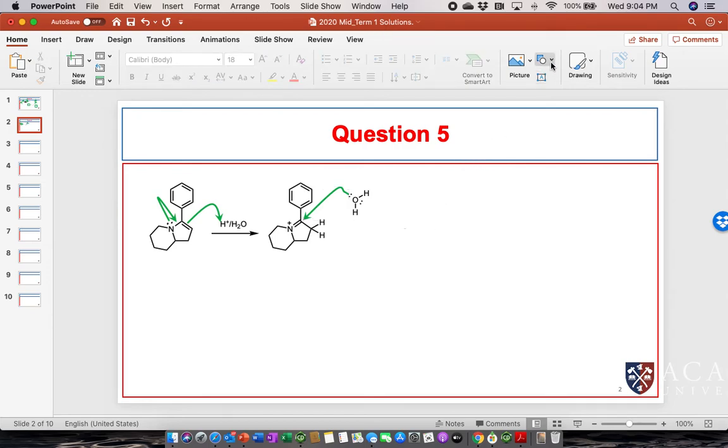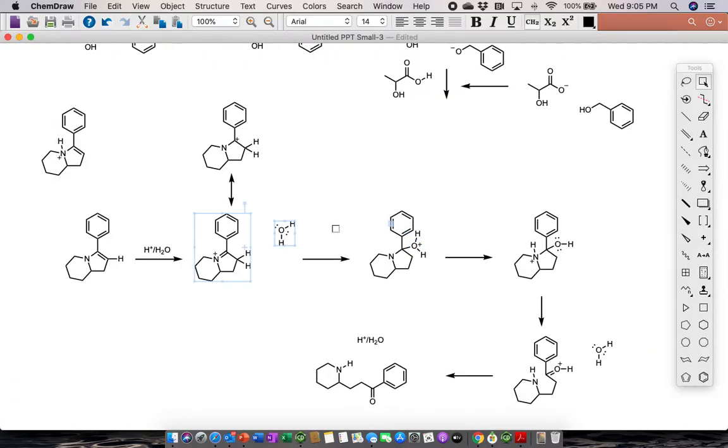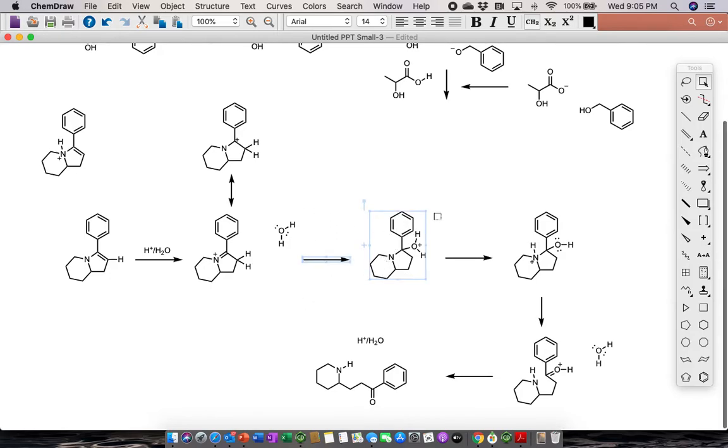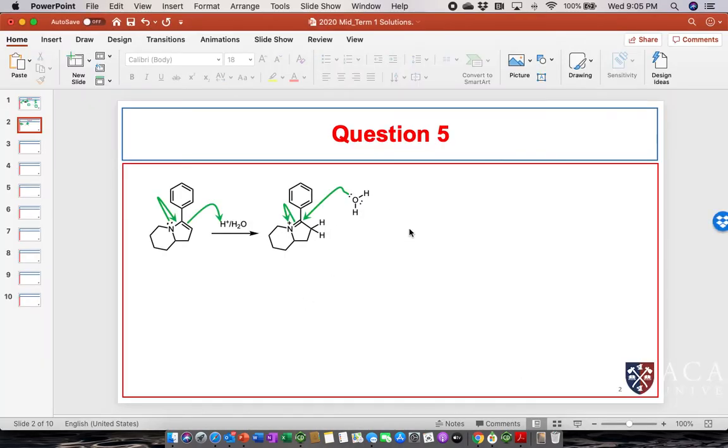When we do that, we have to break this nitrogen-carbon double bond and promote the electrons up onto the nitrogen. So we now get the species here.